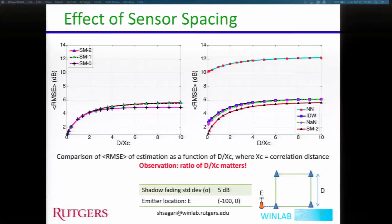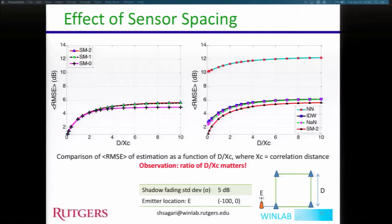A question was raised asking for an interpretation of d over xc. When d over xc is really low, all sensors are located within a range where shadow fading is highly correlated. For example, if the correlation exists up to 1000 meters, it's not necessary to have sensors every 10 meters — they can be far away and still give good results. In open space where correlation distance is high, we need very few sensors. But in scenarios like New York City where correlation distance is small, we need high sensor density.